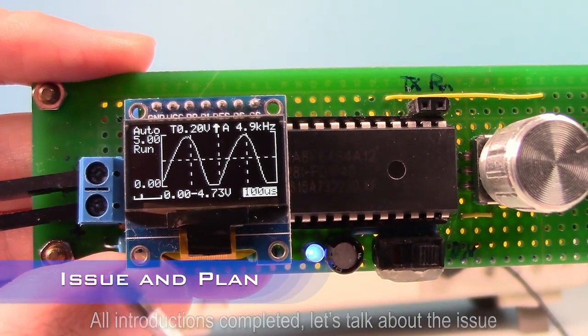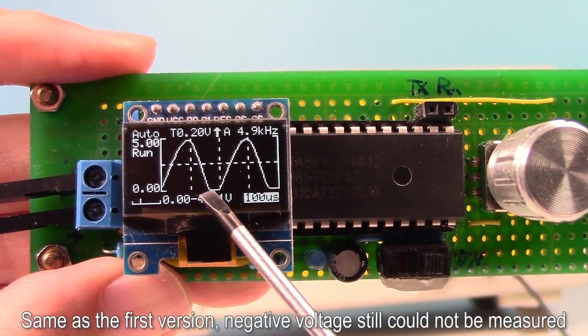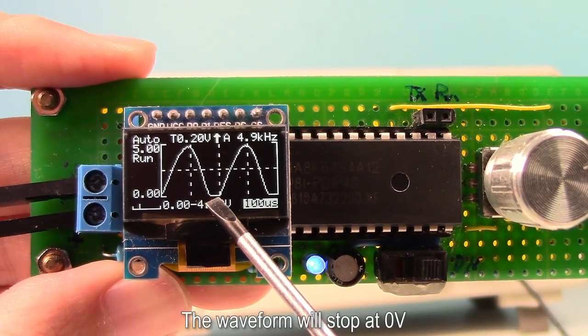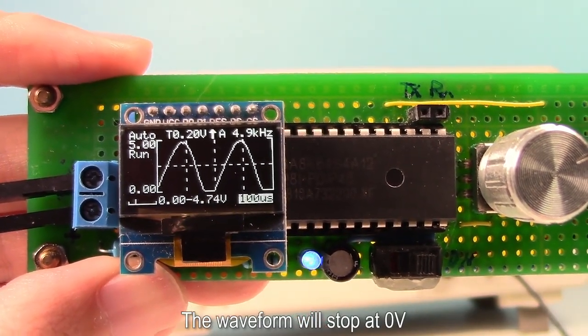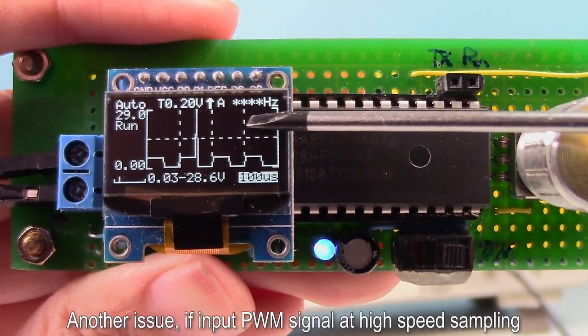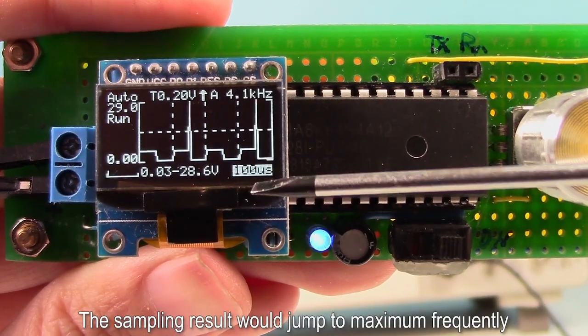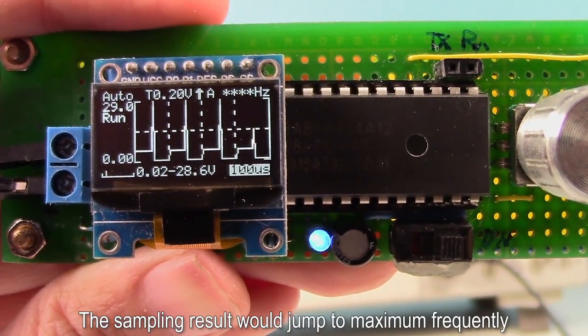Same as the first version, negative voltage still could not be measured. The waveform will stop at zero volts. Another issue, if input PWM signal at high-speed sampling, the sampling results will jump to maximum frequently. I asked STC engineer about this issue, but didn't get a clear explanation.